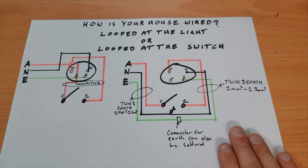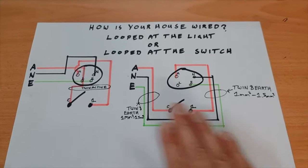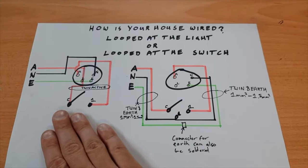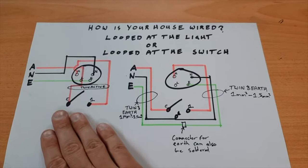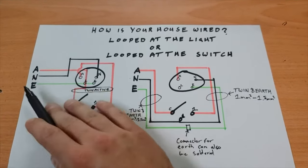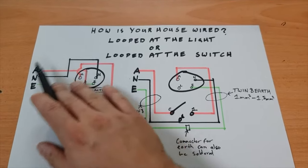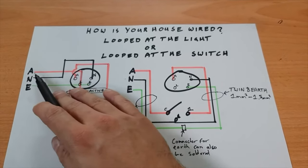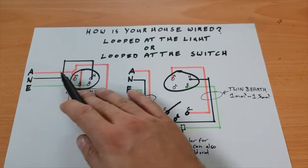So the first example, looped at the light, this is how it works. At your switchboard, your circuit breakers and stuff like that, you have an active, neutral, and earth. The active always has power on it coming out to your first light.